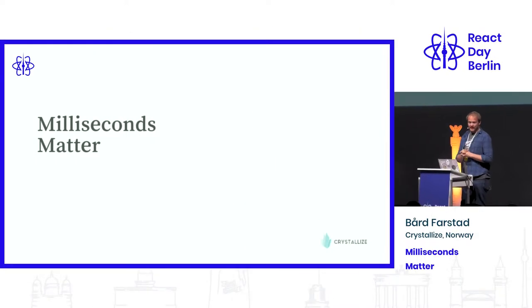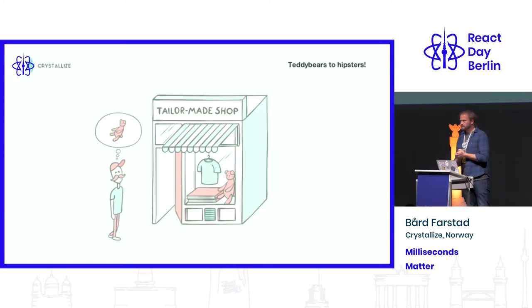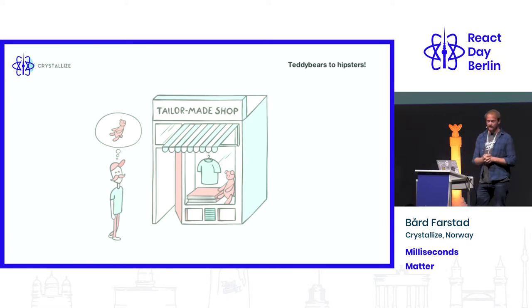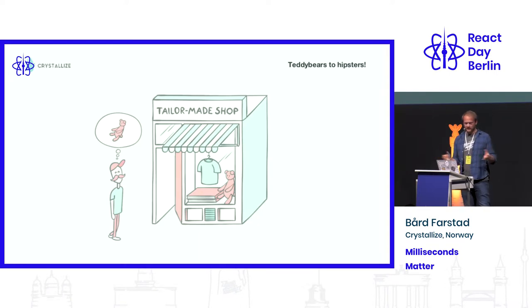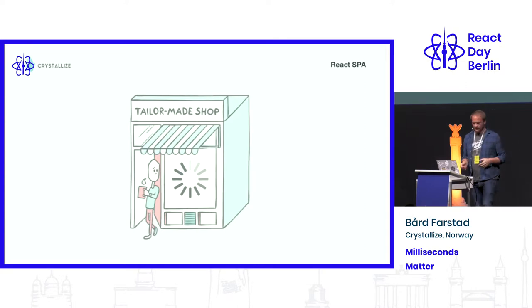I want to talk about something I deeply care about: latency, or lack thereof. Let's say you want to sell teddy bears to hipsters, and since we're at React Day in Berlin, you want to build this in React. The first thing you start with is of course building a SPA application, because that's the first thing you go to when you build a React webshop.